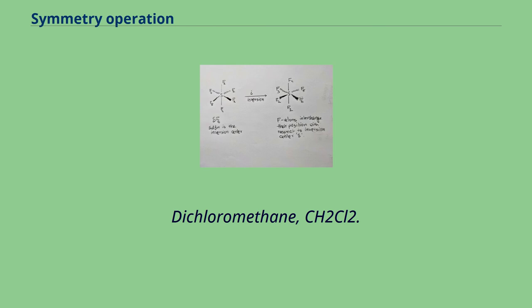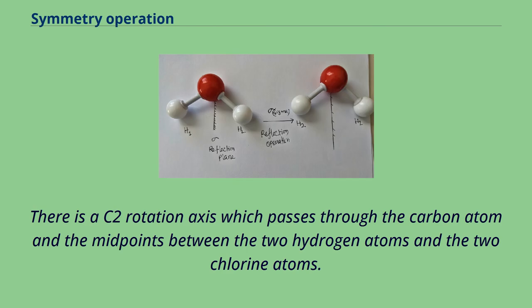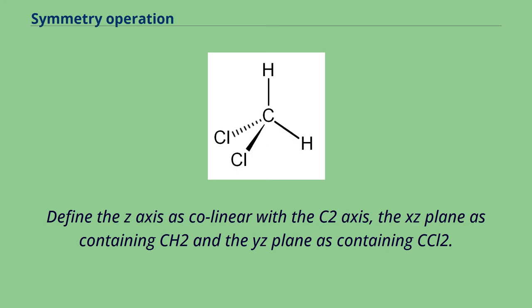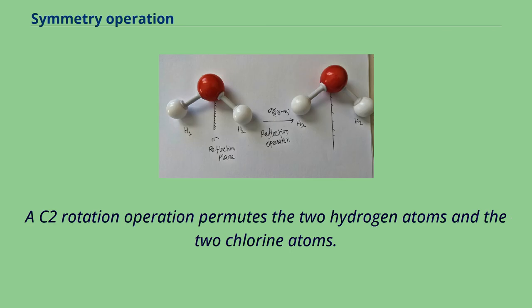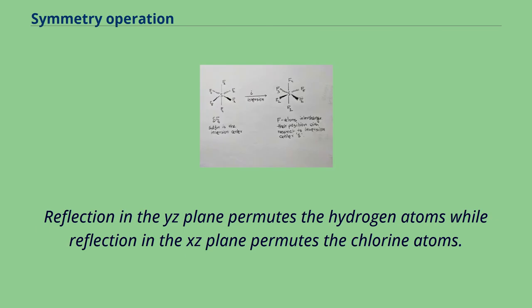Dichloromethane, CH2Cl2. There is a C2 rotation axis which passes through the carbon atom in the midpoints between the two hydrogen atoms and the two chlorine atoms. Define the Z axis as collinear with the C2 axis, the XZ plane is containing CH2 and the YZ plane is containing CCl2. A C2 rotation operation permutes the two hydrogen atoms and the two chlorine atoms. Reflection in the YZ plane permutes the hydrogen atoms while reflection in the XZ plane permutes the chlorine atoms.